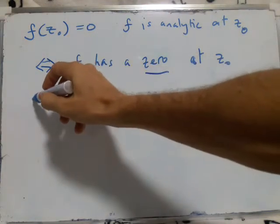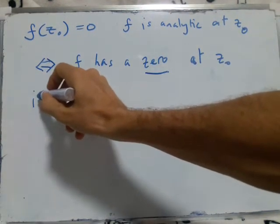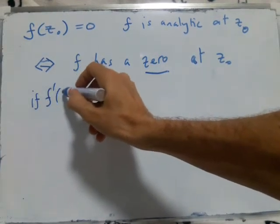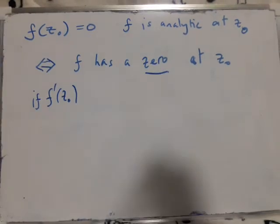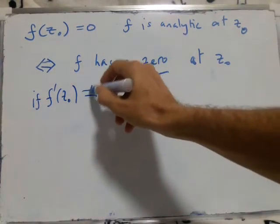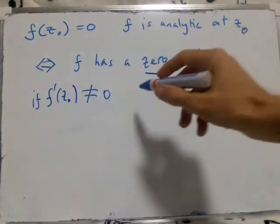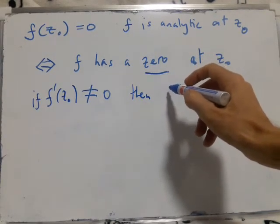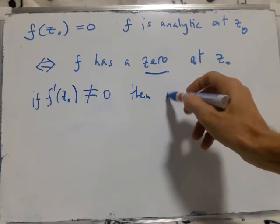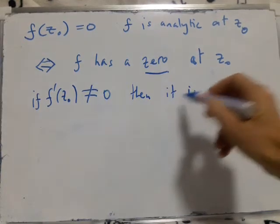If f dashed at z0 is not 0, then we say it's a simple zero.